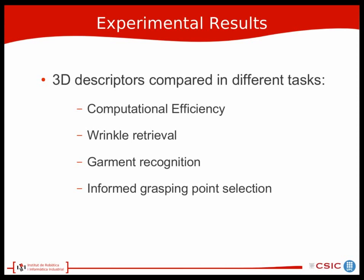We evaluated the proposed descriptor through several experiments related to perception for cloth manipulation. First, we performed a computational efficiency assessment to measure how fast our descriptor is. Then we conducted a wrinkle retrieval experiment, followed by garment recognition — essentially garment classification into six categories — and finally an informed grasping point selection for picking up polo shirts.